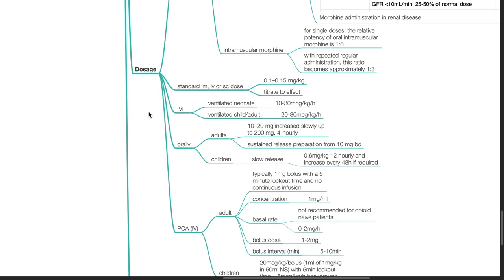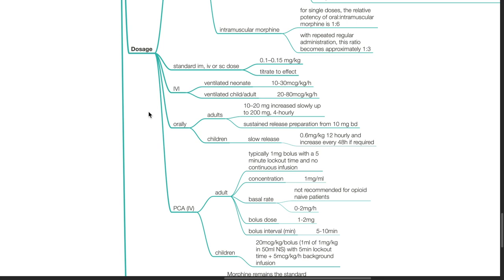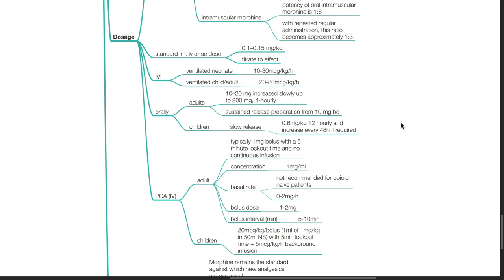For IVI dosage of morphine. For ventilated neonate, 10 to 30 mcg per kg per hour. For ventilated child or adult, 20 to 80 mcg per kg per hour. Oral dose in adult, 10 to 20 mg increased slowly up to 200 mg 4 hourly. Sustained release preparation from 10 mg BD onwards.